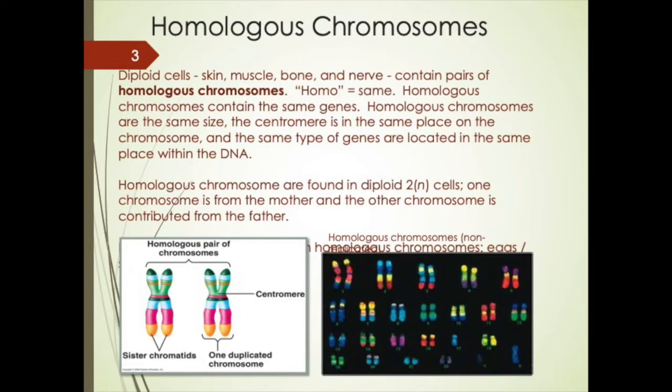We have homologous chromosomes. 'Homo' means same in Greek. Homologous chromosomes are both the same type of chromosome — they contain the same genes. Keep in mind they don't contain the same alleles if you have heterozygous genes. Homologous chromosomes contain the same genes, they're the same size, the centromere is in the same place, and the same type of genes are located in the same place within the DNA.